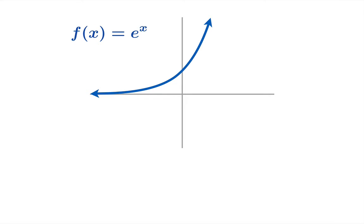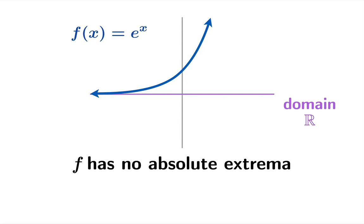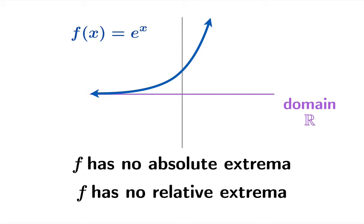Consider the exponential function e^x, whose domain is all real numbers. There's no greatest value, and there's no minimum value either, because as x goes to negative infinity the function value approaches zero but keeps decreasing. So there are no absolute extrema — neither an absolute max nor an absolute min. Since the function increases on the real axis, there's no relative peak or valley either, so this function has no relative extrema.